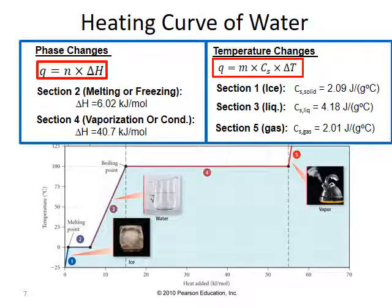These two formulas can be used in combination for any number of processes involving phase changes. To use them, you must know the constants for enthalpy and specific heat for all the phases and substances involved. The graph on the screen is known as a heating curve — drawn for water here, but similar graphs can be drawn for any substance. It shows the relationship between temperature on the y-axis and energy added or released on the x-axis. Sections 1, 3, and 5 represent the temperature change that occurs as heat is added to a single phase: section 1 for ice, section 3 for liquid water, and section 5 for steam. The heat absorbed during each of these sections can be calculated using the heat capacity formula Q equals m times c times delta T. Each phase has its own specific heat capacity value, so it's important to use the correct constant for each phase.